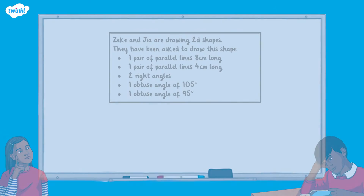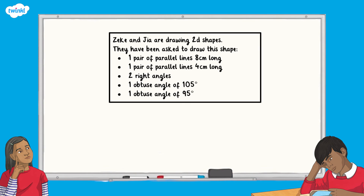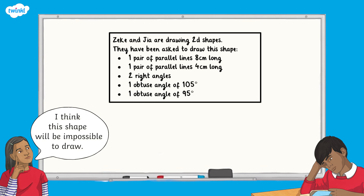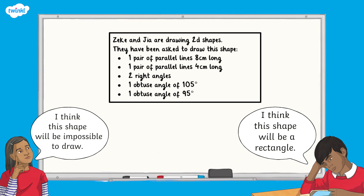Now let's apply what we've learned about drawing shapes accurately to our final challenge question. Zeke and Gia are drawing 2D shapes and have been asked to draw a shape with one pair of parallel lines which are eight centimetres long, one pair of parallel lines which are four centimetres long, two right angles, one obtuse angle of 105 degrees, and one obtuse angle of 95 degrees. Gia says the shape will be impossible to draw, and Zeke says the shape will be a rectangle. Who is correct? Pause the video whilst you work out your answer.